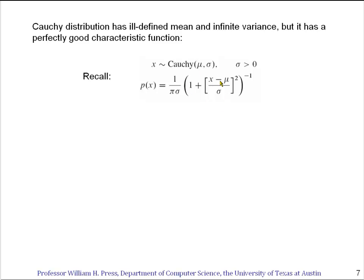Recall that its probability distribution goes down as one over one plus, again, this square of x minus the central value divided by the width. Notice I'm trying to be a little bit careful not to call this the mean and the standard deviation, because they're not.